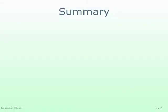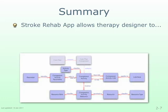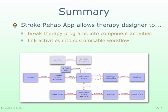We can summarize the second part of this presentation by emphasizing that the central database supporting the Stroke Rehab app can store and maintain data objects that enable therapy designers to break a therapy program down into a number of component activities, link those activities together into a customizable workflow, and specify the involvement of various kinds of resources including information in those activities. These data structures provide enormous flexibility in the design of workflows that can deliver a wide range of therapy programs to stroke survivors living in their communities.